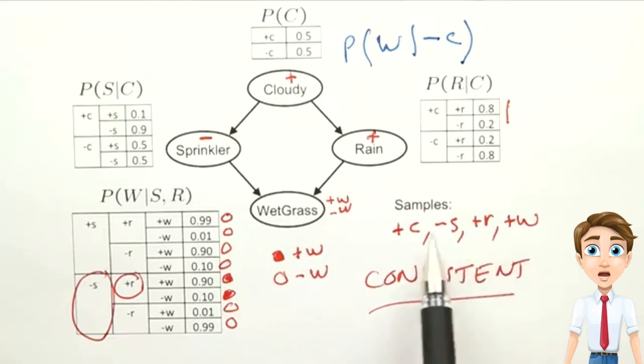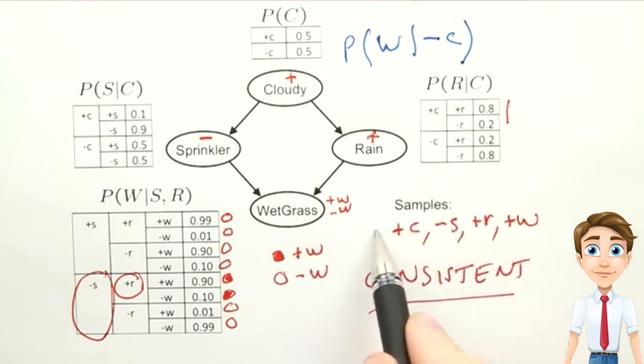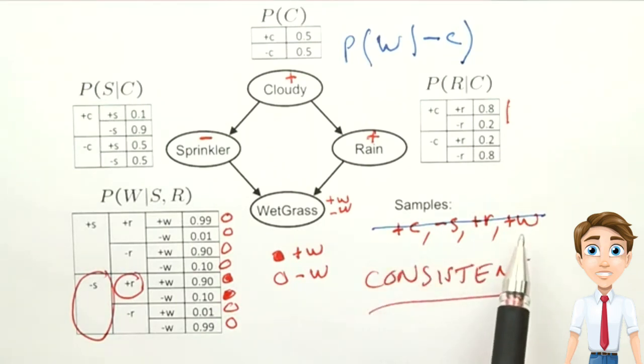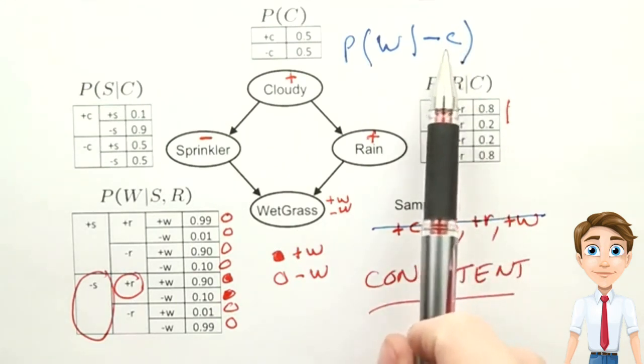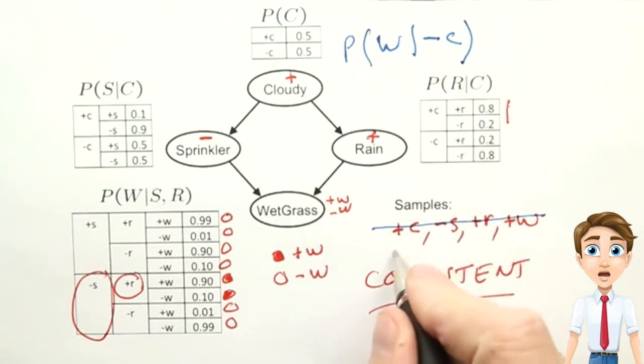To do that, the sample that we generated here wouldn't be helpful at all, because it has to do with being cloudy, not with being not cloudy. So we would cross this sample off the list. We would say that we reject the sample, and this technique is called rejection sampling. We'd go through ignoring any samples that don't match the conditional probabilities that we're interested in, and keeping samples that do.